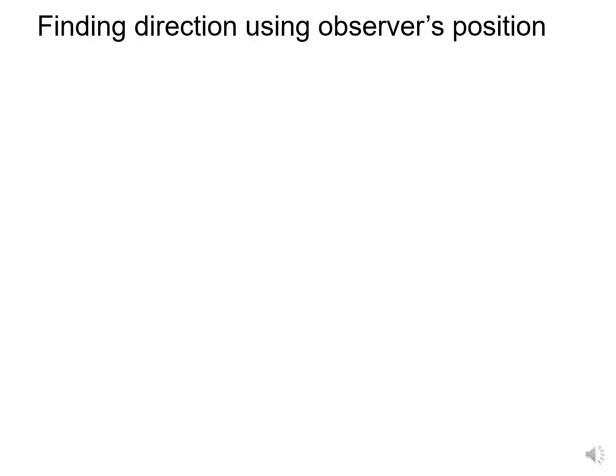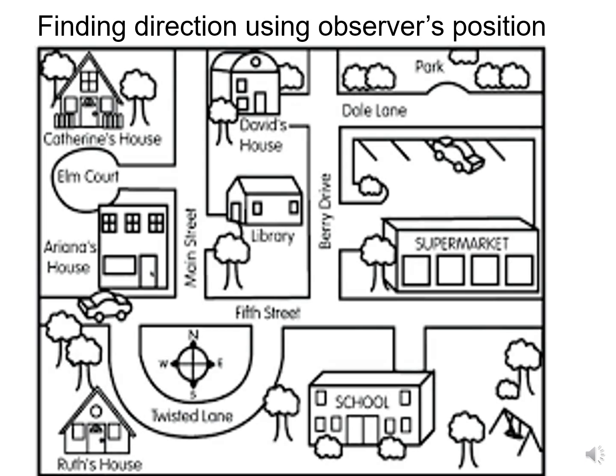Let us have an illustration of how to find direction on a topographical map using the observer's position. Please remember, you have to be at the observer's position in order to find out the direction. Let us say this is a neighbourhood map — that is where you live. You are standing outside the library.